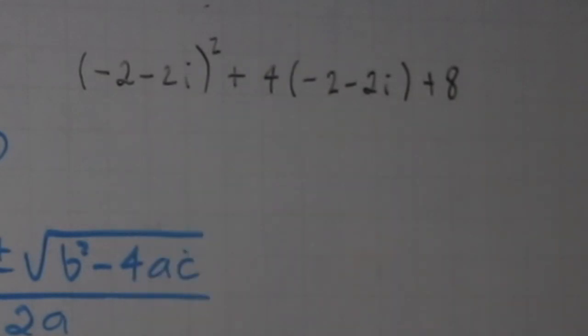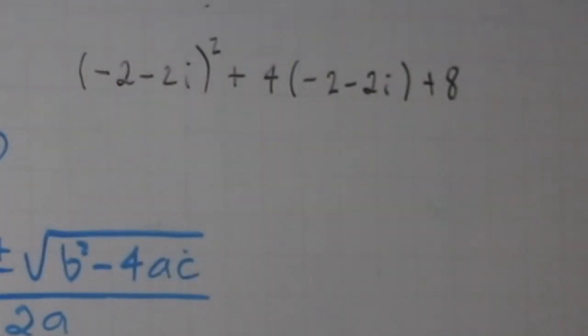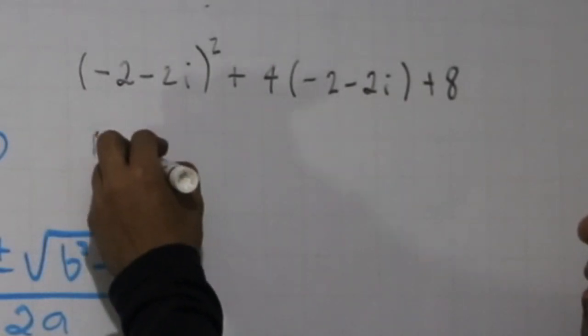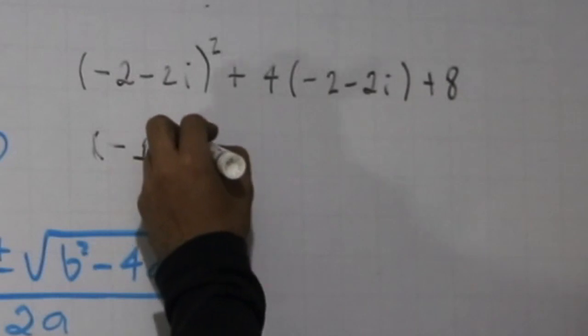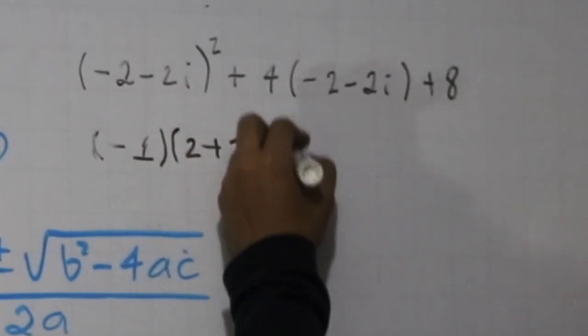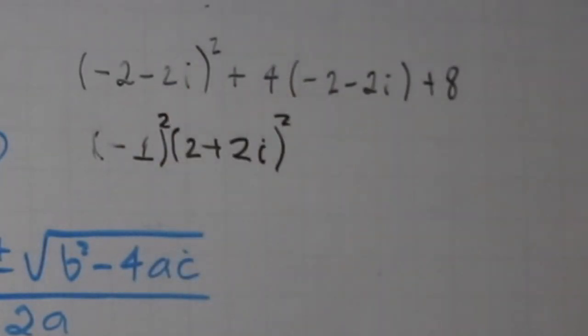And that would be -1 multiplied by (2 + 2i). And remember, everything is squared, so square, square. Plus 4 multiplied by -2, that's -8.